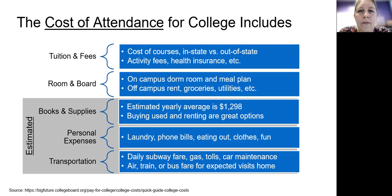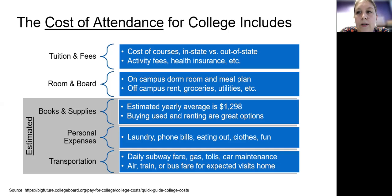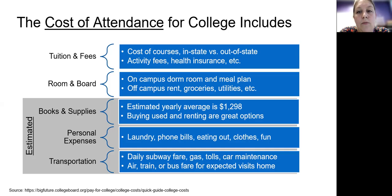The cost of attendance for college includes tuition and fees and room and board. These are the direct costs that will be on your bill, and this includes the cost to register for all of the courses that they're going to take. It may include living in a dorm room or a meal plan, and/or any off-campus rent, groceries, utilities, etc.